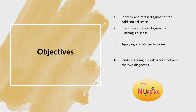Let's get into the objectives of this brief video. We will be identifying and retaining the diagnostics for Addison's as well as Cushing's disease, so that you're able to apply that knowledge to exams. I always tell you guys to study in the fashion of assessment, diagnosis, evaluation, and treatment. I will put the link to the video where I discuss everything about Addison's and Cushing's — including presentation, treatment, etc. — in the description box. This video is strictly for the diagnostics as requested, and I want you to understand the difference between the two.